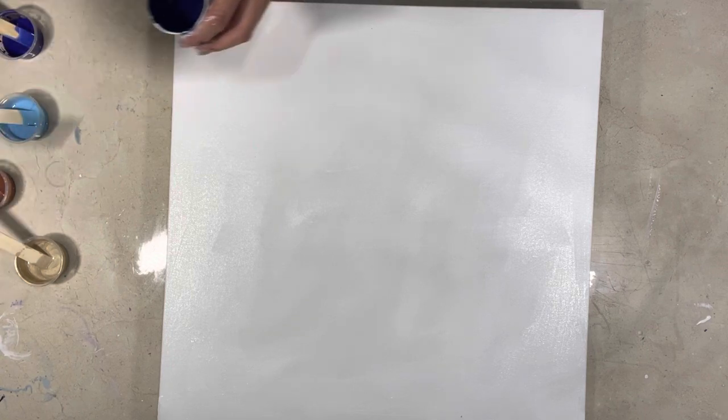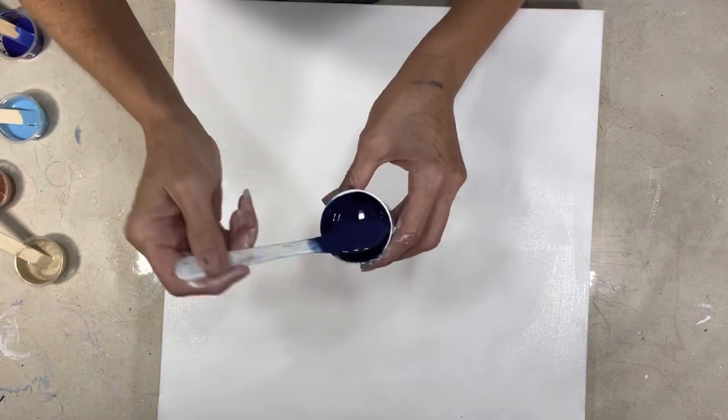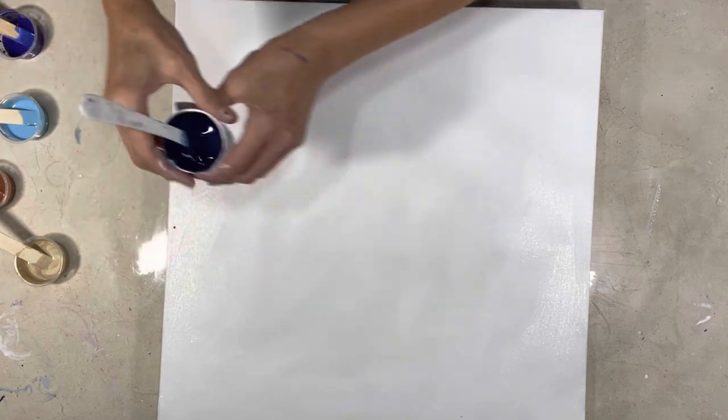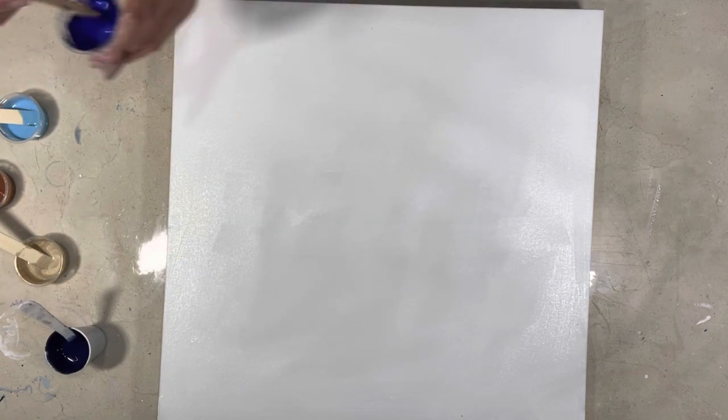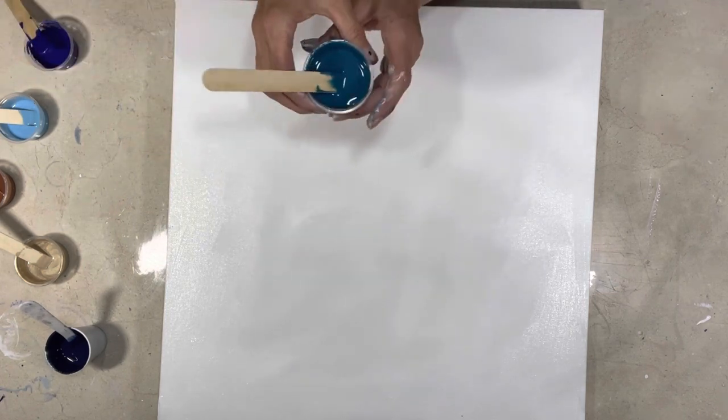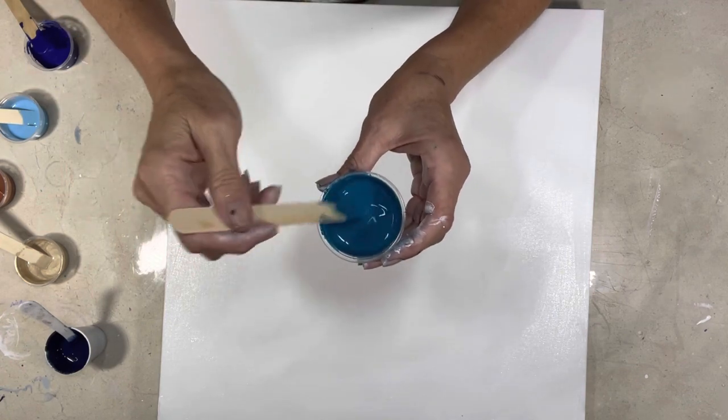I'm going to be using my blow dryer and it's not really a Dutch pour but it's going to be a pearl pour with lacing. I just mixed up this one so I might have some bubbles. This is Golden's Payne's gray and Prussian blue hue mixed with lots of water.